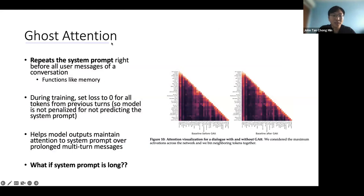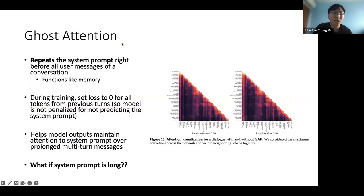This is called ghost attention. So what is ghost attention? They realized that once they train multi-turn conversations, the model kind of forgot the system prompt after a while. For example, if the system prompt is to output everything in emojis, maybe by the fifth or sixth turn, the model will stop outputting emojis for some reason.